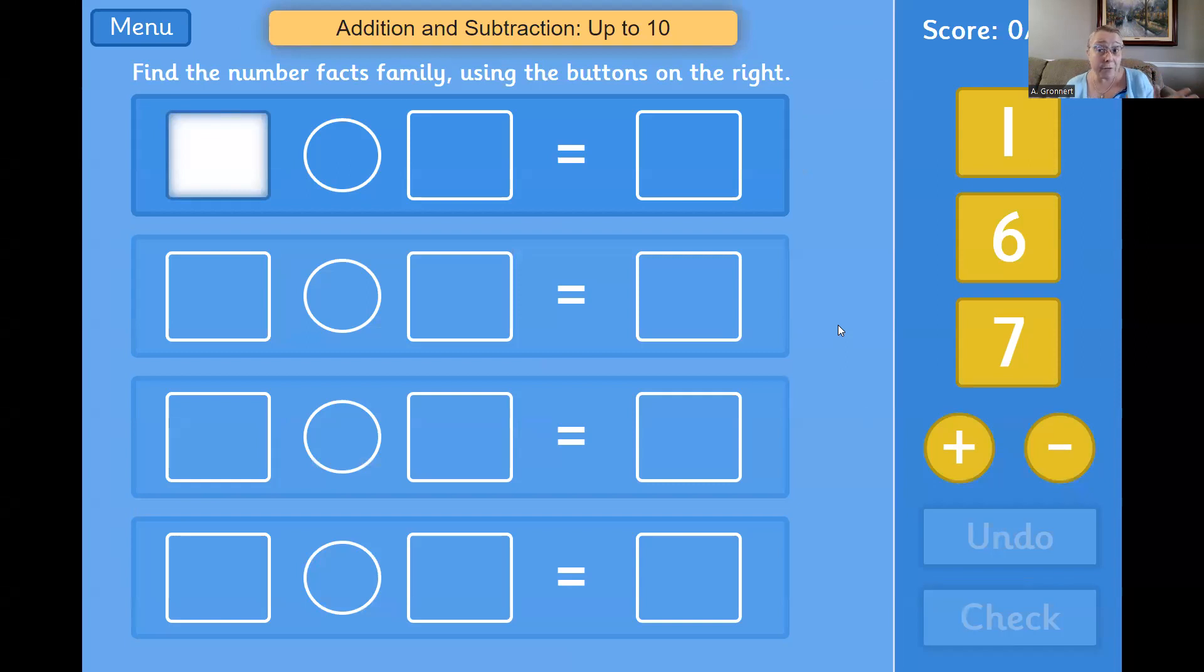Okay, so if you remember, a fact family contains two related addition sentences and two related subtraction sentences. Let's take a look at the numbers on the right of my screen. I have the numbers 1, 6, and 7. Do you know how we can make an addition sentence with those numbers?